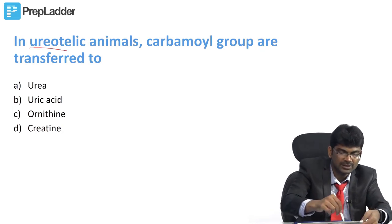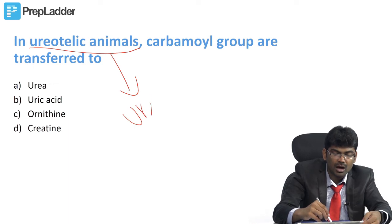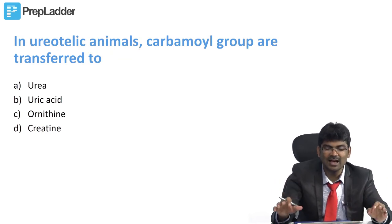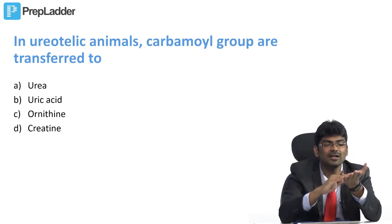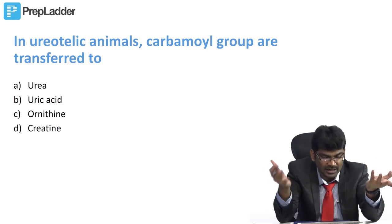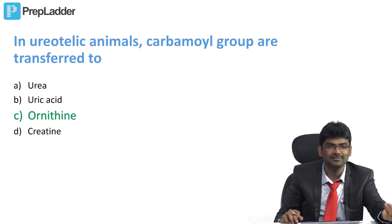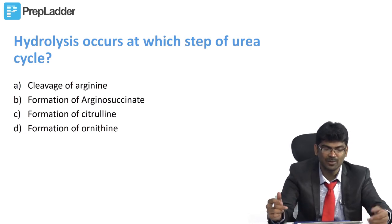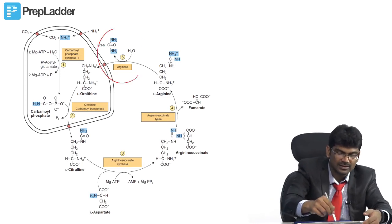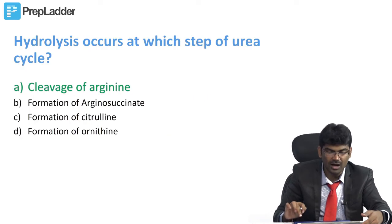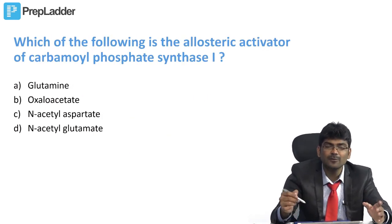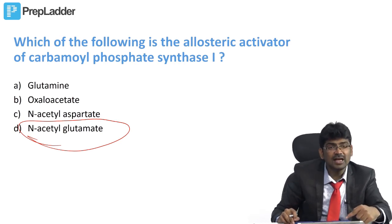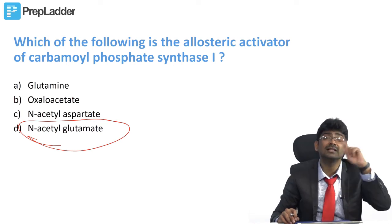In ureotelic animals — those which excrete urea in the urine — the carbamyl group is transferred to ornithine. Carbamyl phosphate reacts with ornithine — that is the next substrate. Which step in the urea cycle involves hydrolysis? Arginine is hydrolyzed to urea and ornithine by arginase. The allosteric activator of carbamyl phosphate synthase 1 (CPS1) is N-acetylglutamate (NAG), and the activator for synthesis of NAG is arginine.